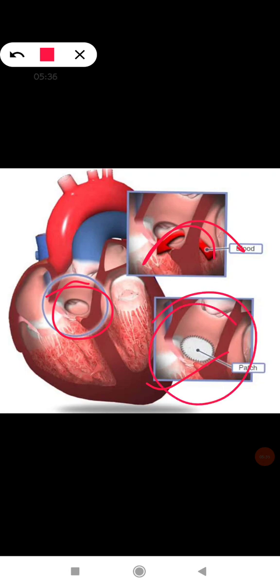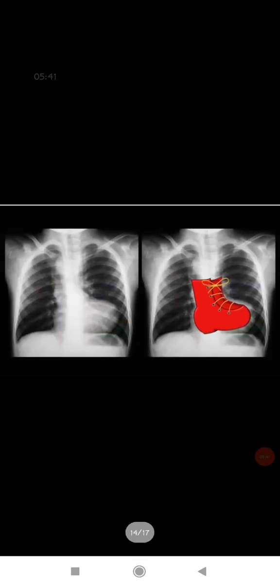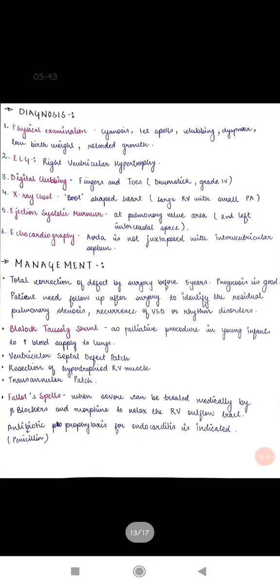Then the third is resection of hypertrophied RV muscles. Left ventricle was going into hypertrophy, we have already studied this thing. So what would we do, the surgeon would just scrape off the hypertrophied muscle. He would resect, he would remove the hypertrophied muscle so that the blood pressure of right ventricle could be decreased and mixing of blood could be prevented.